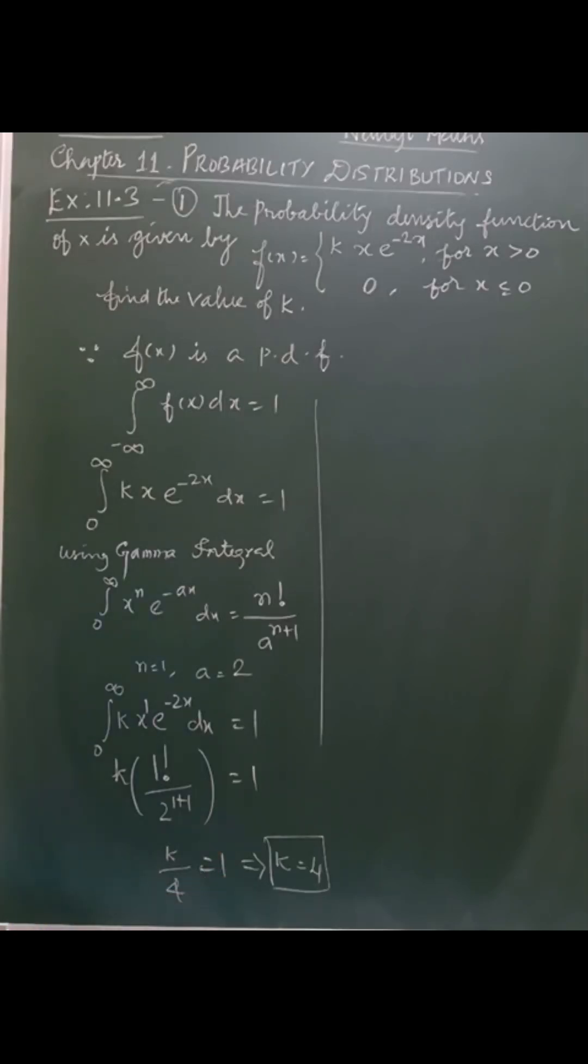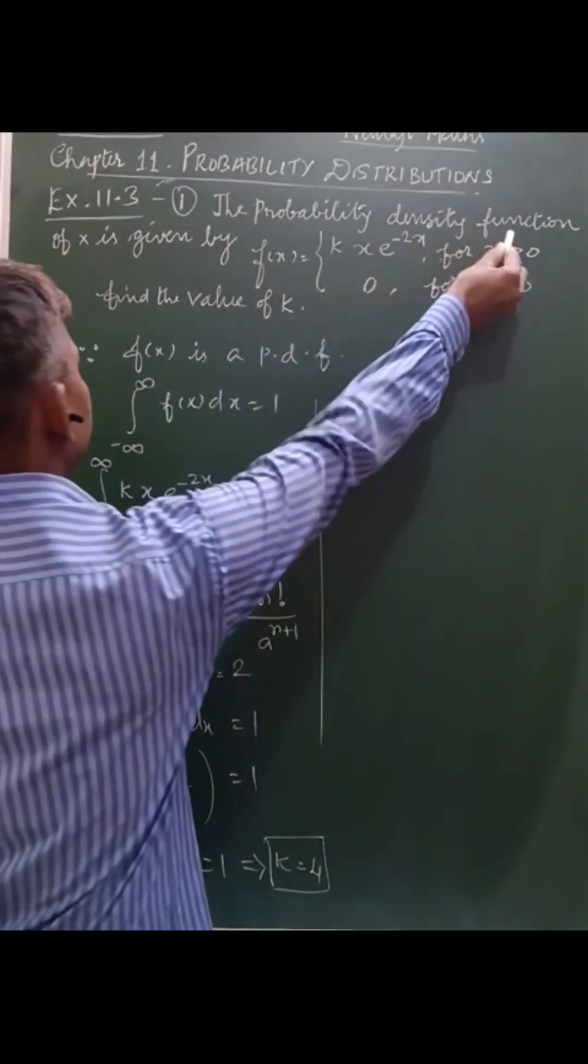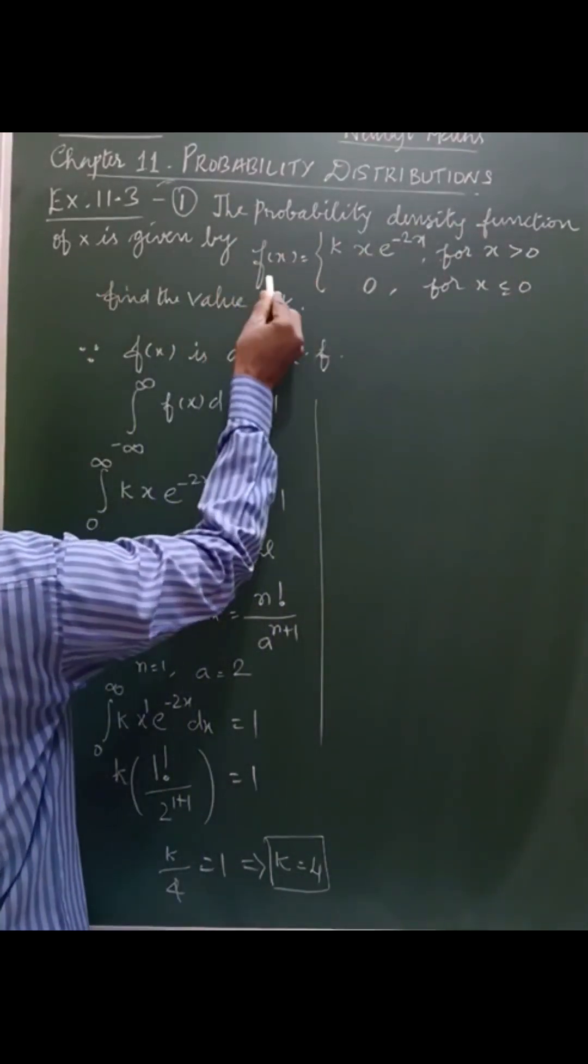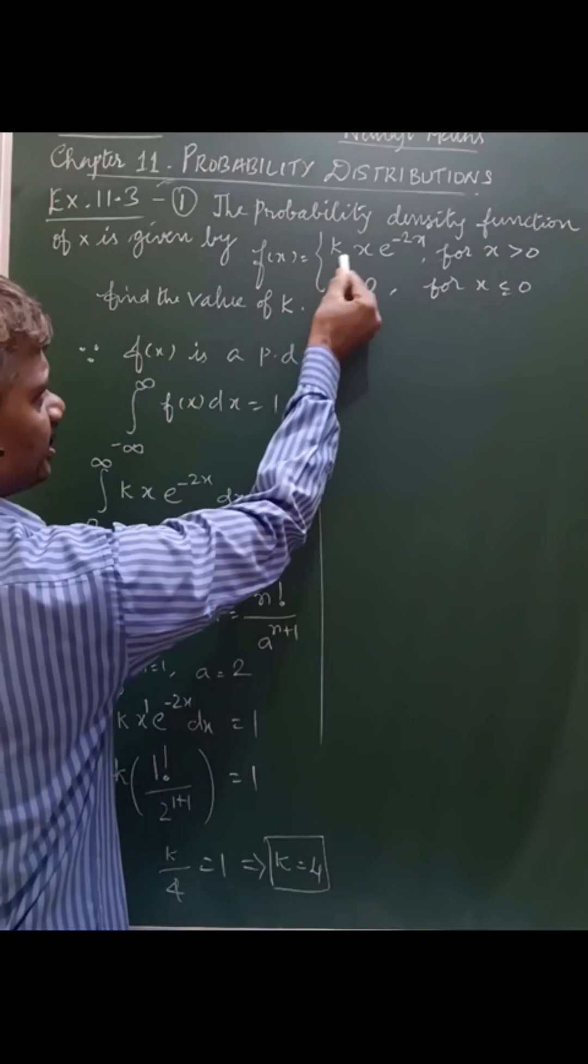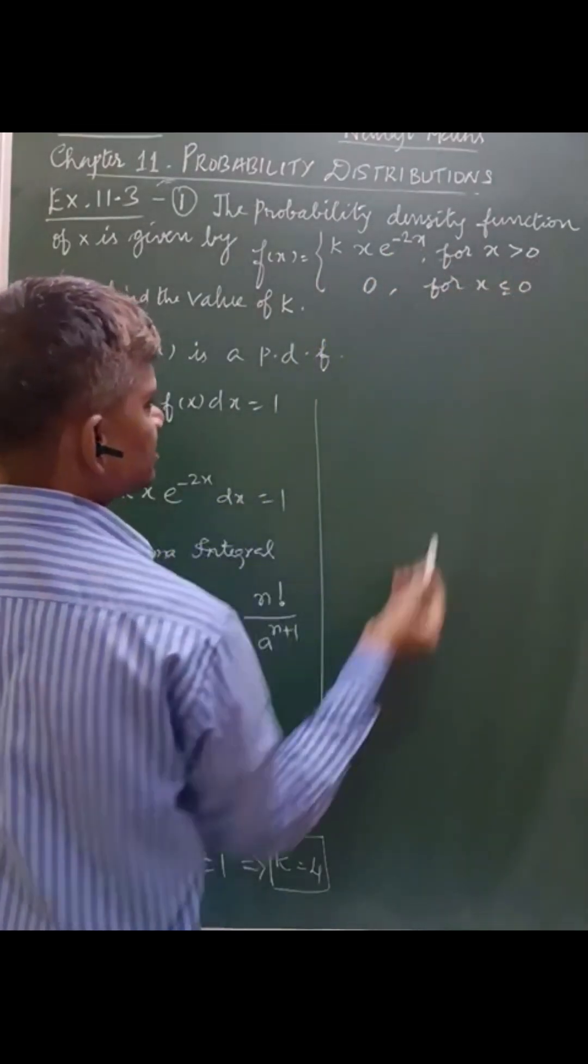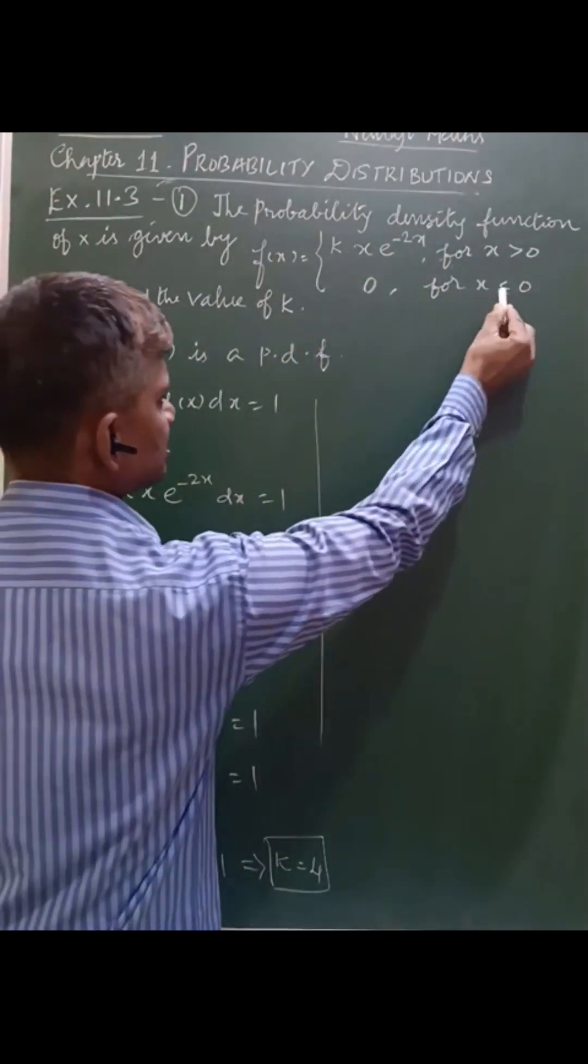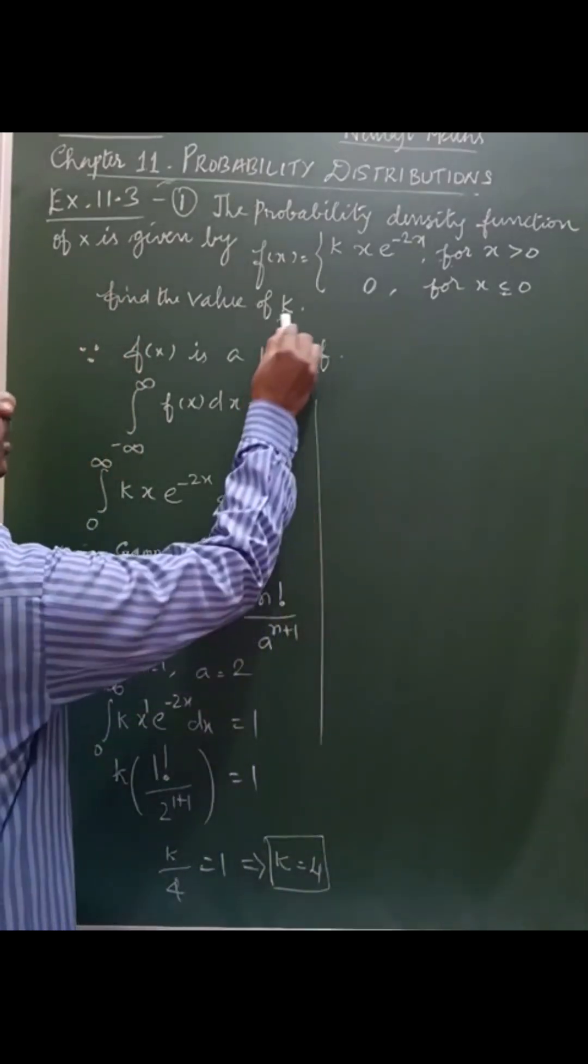Dear Dolcella students, in this video we are going to learn the first step from exercise 11.3. The question is: the probability density function of x is given by f of x equals k x into e power minus 2x for x greater than 0, and 0 for x less than or equal to 0. Find the value of k.